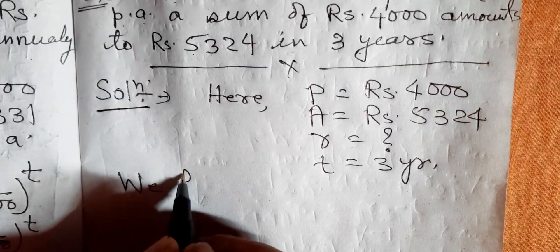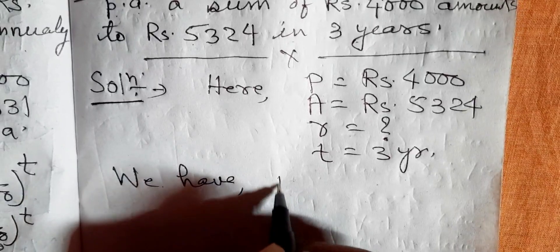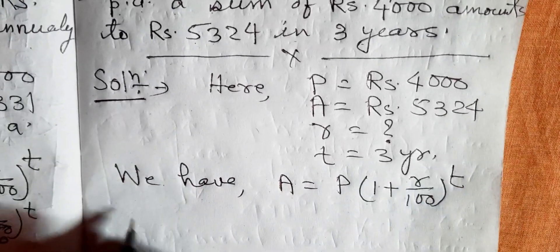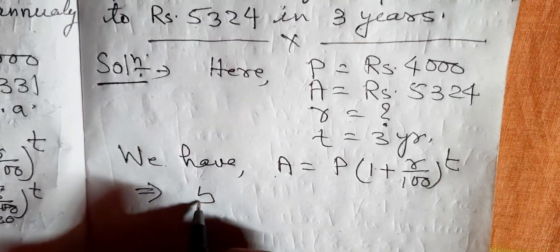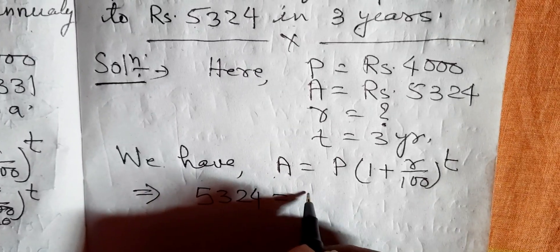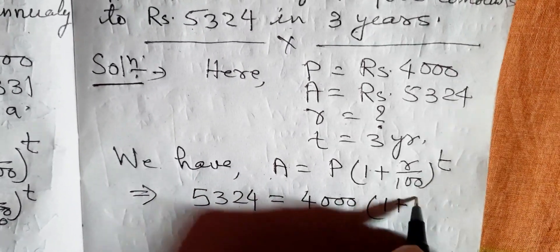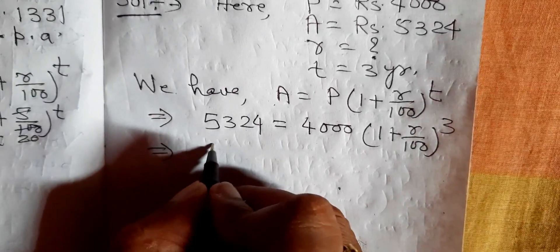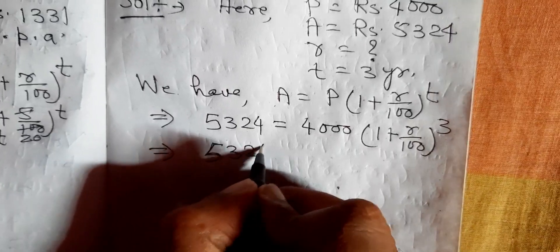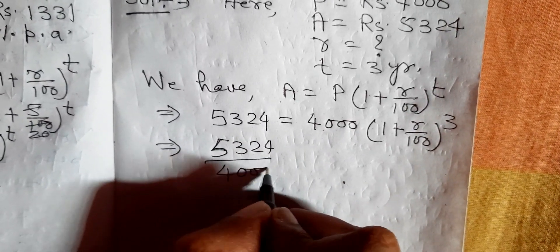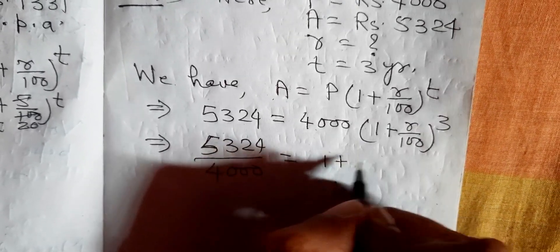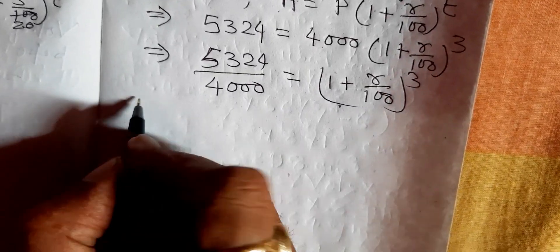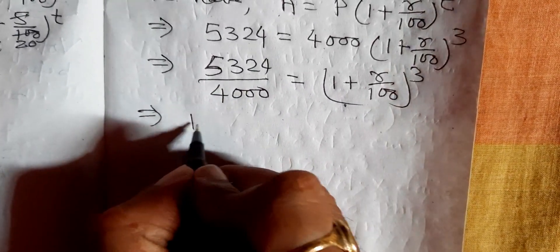We have: A is equal to P into 1 plus R by 100 exponent T. Putting values: 5324 is equal to 4000 into 1 plus R by 100 exponent 3. So 5324 divided by 4000 is equal to 1 plus R by 100 exponent 3. Dividing, we get 1.331 is equal to 1 plus R by 100 exponent 3.